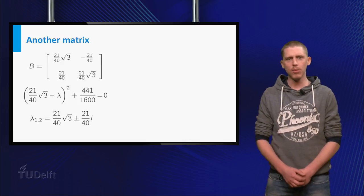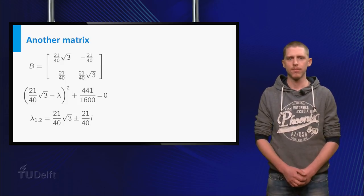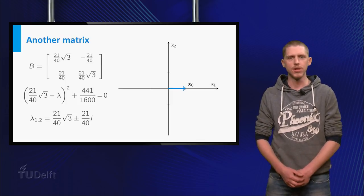To understand what complex eigenvalues represent, let us repeatedly multiply B with a vector. Let us start with the blue vector x given by 1, 0.